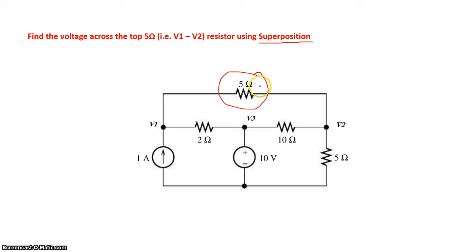Superposition basically says that the voltage drop across this 5 ohm resistor is equal to the individual drops caused by the individual sources.